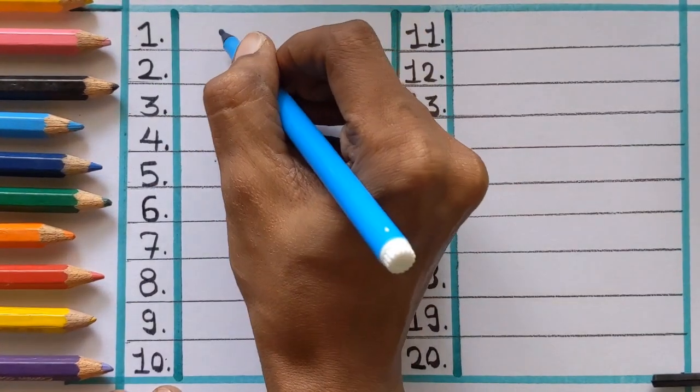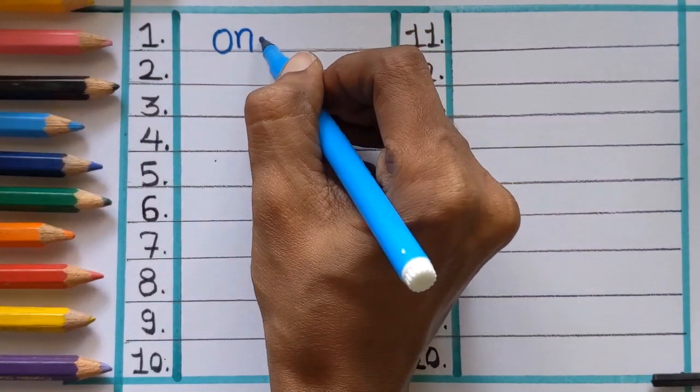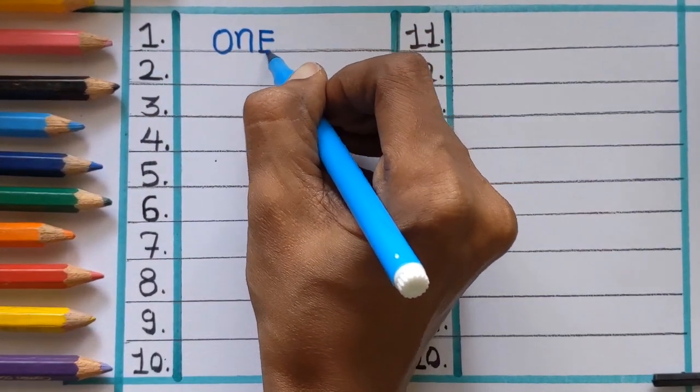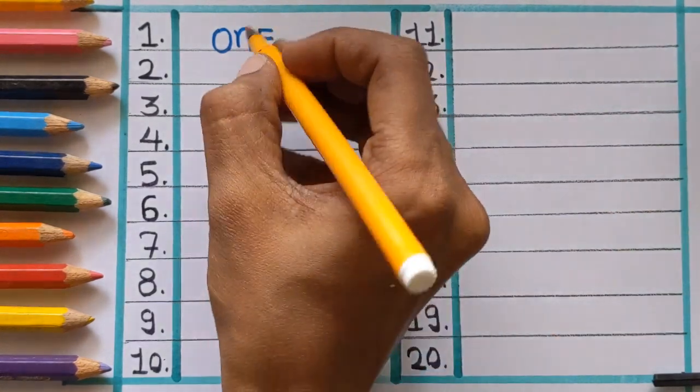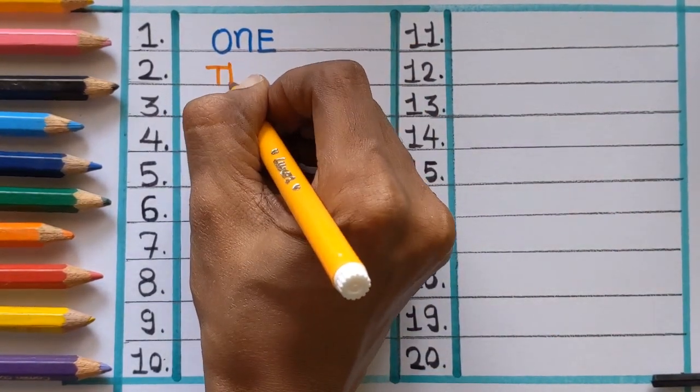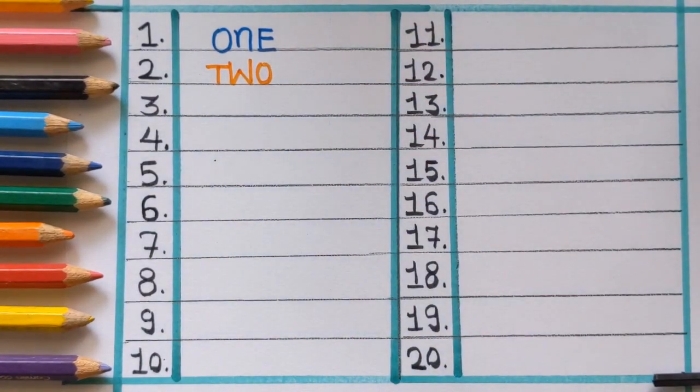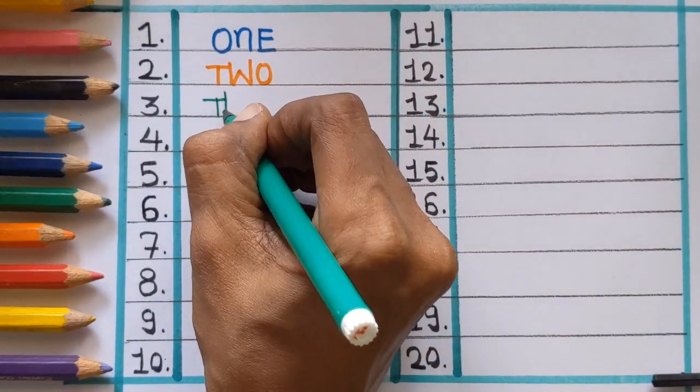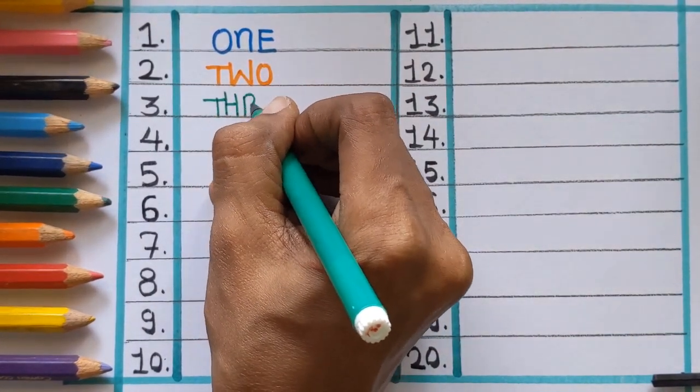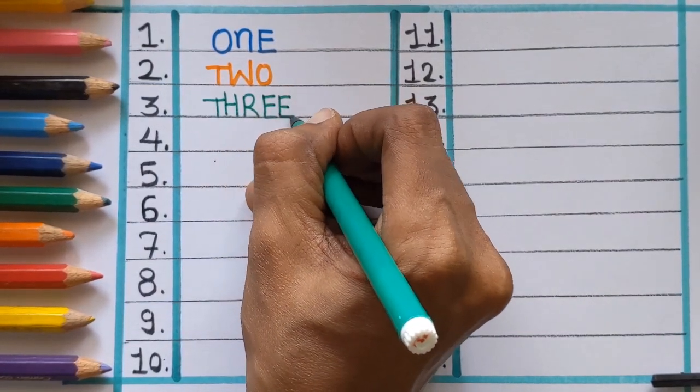One, O-N-E, one. Next number is two, T-W-O, two. Number three, T-H-R-E-E, three.